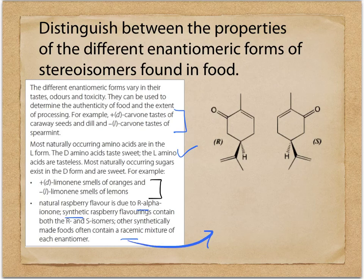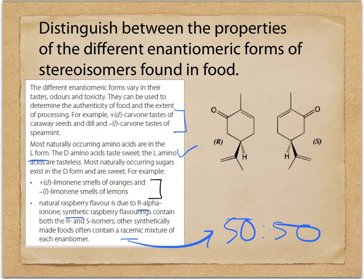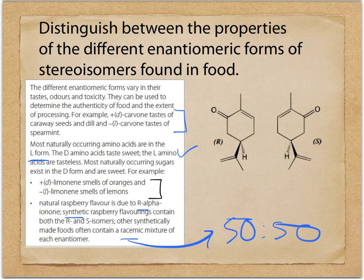A racemic mixture means a 50% mixture of both enantiomers. Naturally, amino acids tend to be in the L-form. D-amino acids would taste sweet. Naturally occurring foods tend to have one or the other based on how they're constructed, but when made synthetically, they more often have a 50-50 mixture.